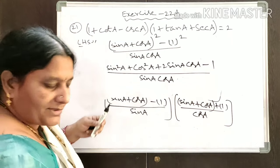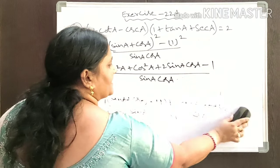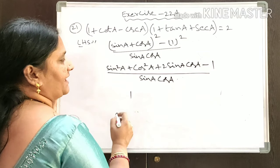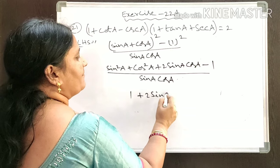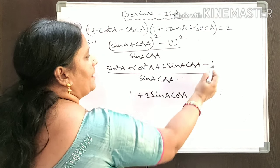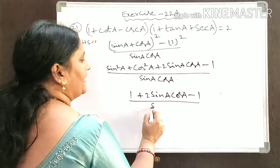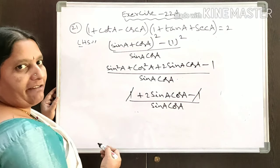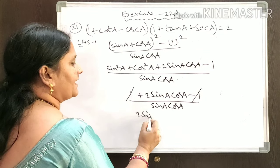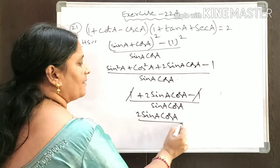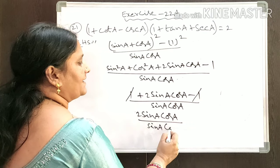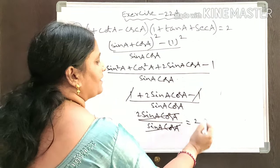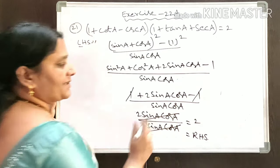According to square relations, sin²A + cos²A = 1. So we replace sin²A + cos²A with 1, giving 1 + 2sinA·cosA - 1, over sinA·cosA. The positive 1 and negative 1 cancel, leaving 2sinA·cosA over sinA·cosA, which equals 2 — that is the RHS.